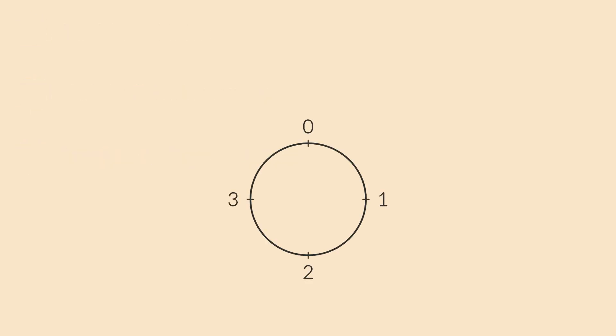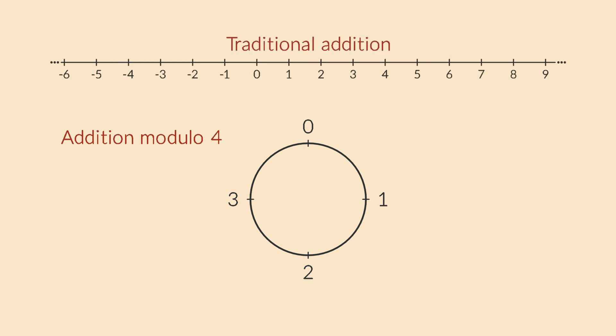Remember that weird clock that we talked about earlier, the one with only 4 digits on it? This is an example of modular addition. The basic idea is that, instead of putting your numbers on a line where they keep going up forever, you put them on a circle instead. Every time you count to higher than 3, you fall back down to 0.